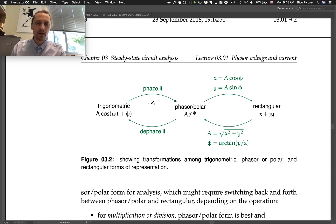Let's look at the diagram for a minute. So, trigonometric form, we often start there. We'll phase it, meaning we'll take the amplitude and the phase and put them into this complex exponential or polar form.